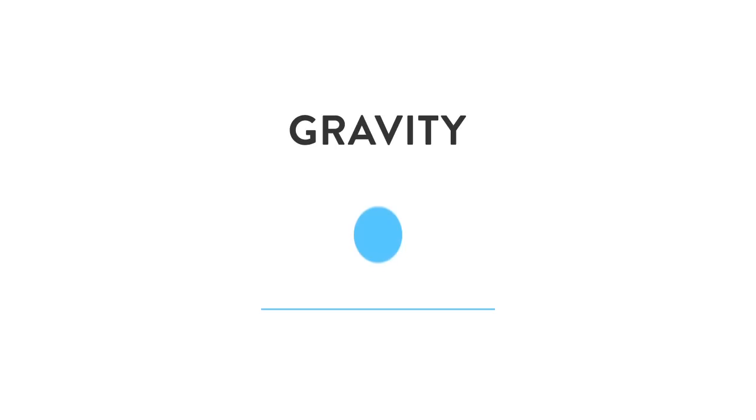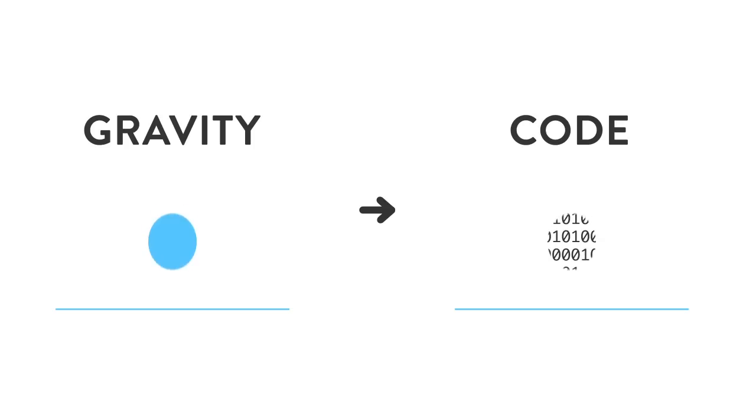As many of you may know, gravity is a natural force that causes things to fall downwards towards the earth. If we hold a ball up in the air and let it go, gravity will take effect, causing the ball to fall downwards until it hits some sort of surface beneath it. This explains how gravity works from a high level standpoint, but it's important that we also understand it from the technical side if we were to effectively translate this effect over to code.